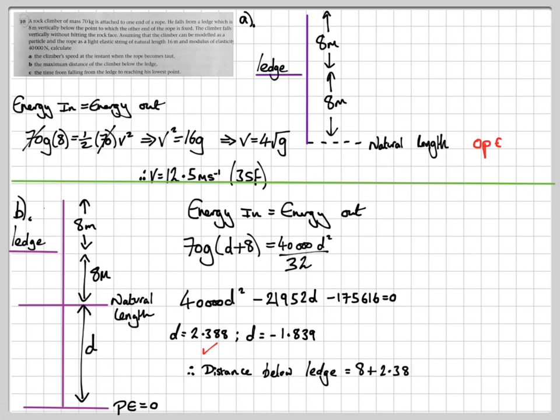Obviously, I want D to be the positive value. Adding that onto 8 gives me a distance of 10.388, which is 10.4 to 3 significant figures. So that's part A and B done. Now onto the part that was actually asked about, which is part C.